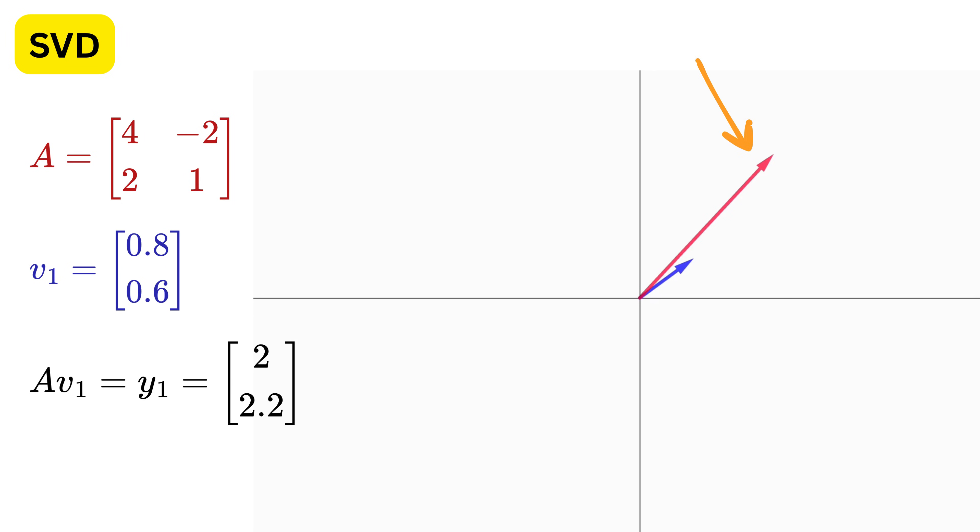Look at this red vector, which is the transformed vector Y1. Now, if we slowly rotate this vector V1, then every time it turns to a new direction, A will again transform it into a new output vector, or a new Y1.